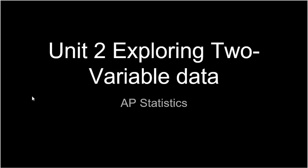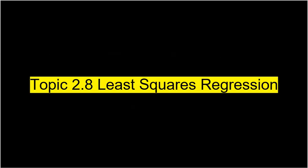Welcome to Unit 2: Exploring 2-Variable Data. This is an extension to topic 2.8, least squares regression. What we're going to do in this video is look at a problem where we cover all the big ideas that we learned in 2.8 on least squares regression.